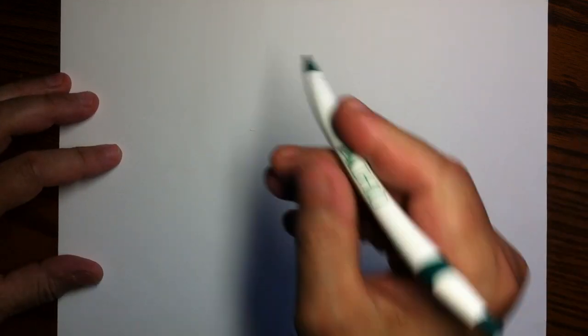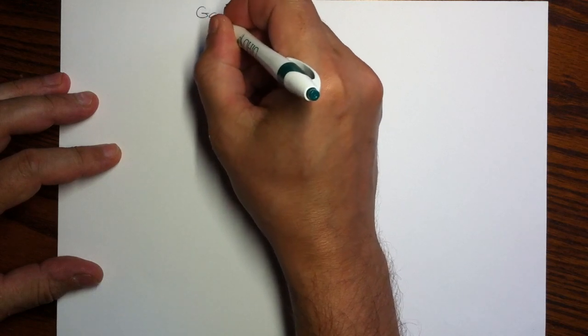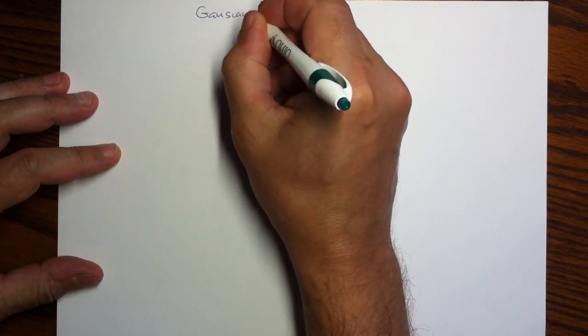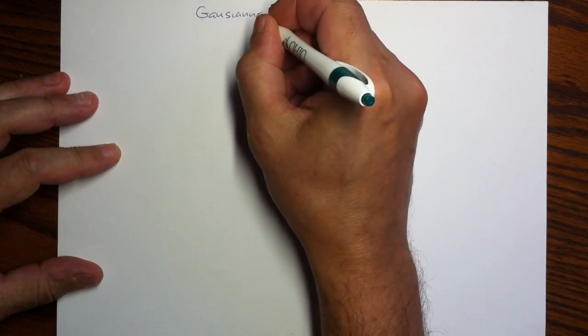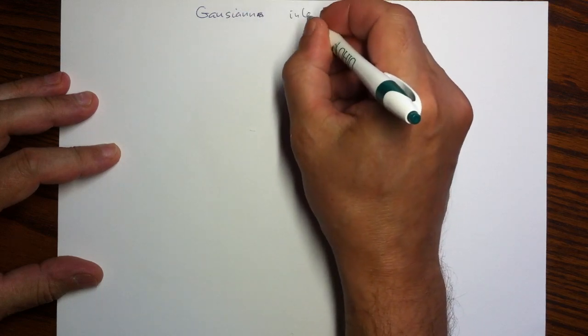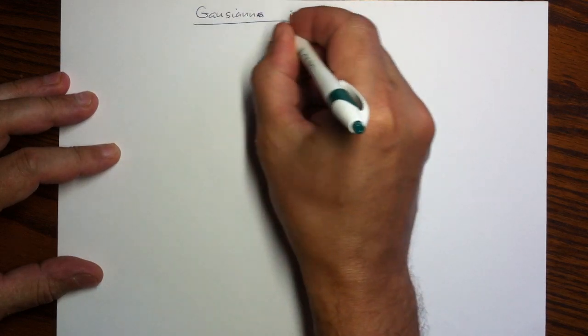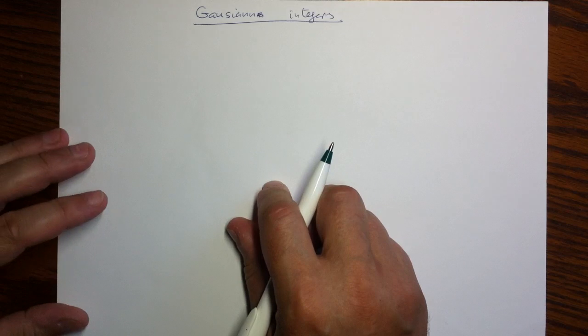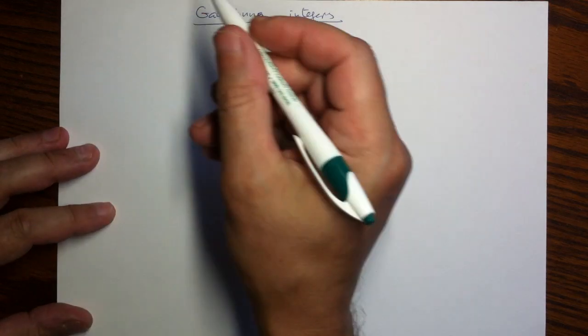Hello! This video will be on what is called Gaussian integers. These are complex numbers of special shape.